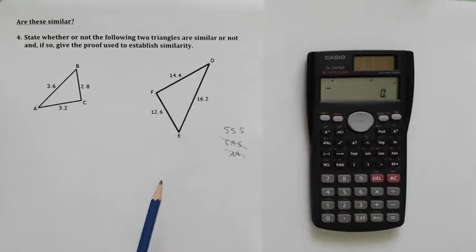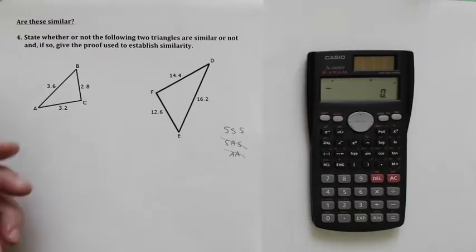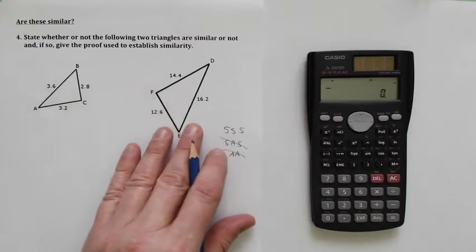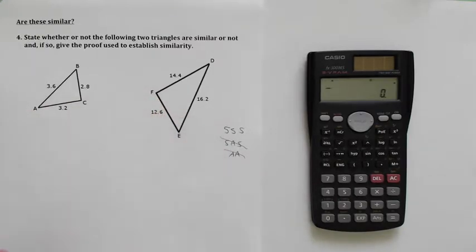So each of the sides must have the same scale factor. So we're going to set this up, and I'm going to compare triangle ABC to triangle DEF or FED or call it what you will. We're going to compare the big side to the big side. So I'm going to look for the biggest side over here, which is 3.6.